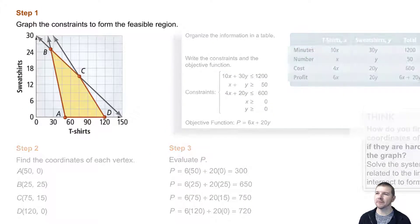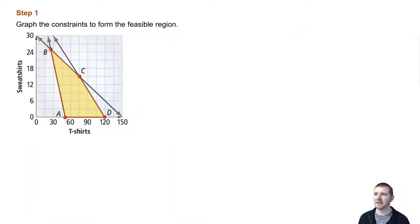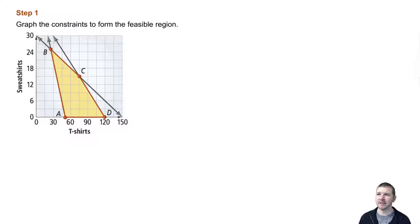Step 1: Graph the constraints to form the feasible region. Graphing the constraints, we can see the feasible region highlighted here in yellow. Remember, each point in the feasible region satisfies all of our constraints.